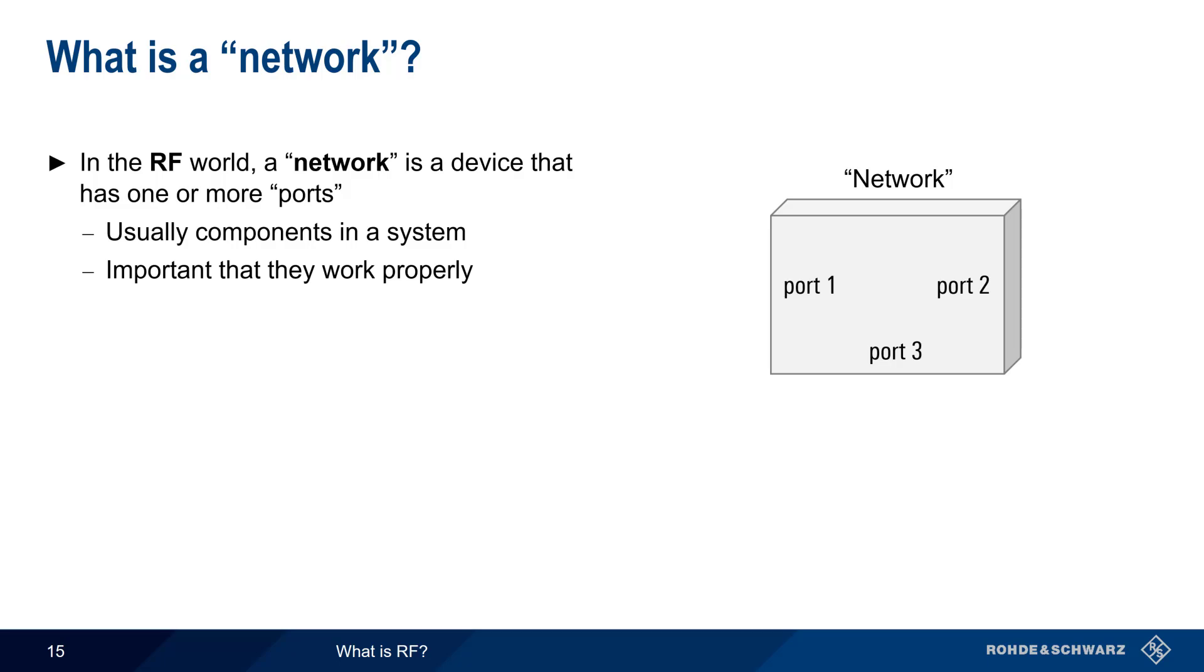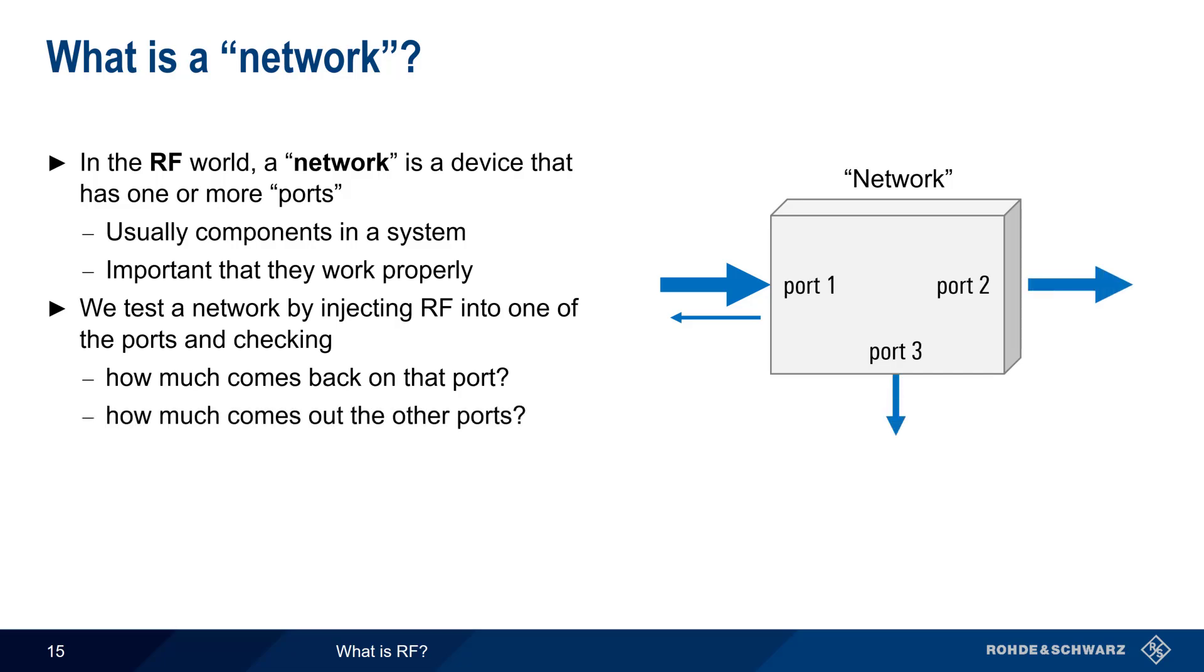It is important that these components work properly to ensure the performance of the entire system, and therefore we need an accurate, reliable, and repeatable way to measure them. Networks are tested by injecting RF into one of the ports, and simultaneously measuring how much RF is reflected back from that port, and how much RF comes out of the other ports. We also might be concerned with how much delay is introduced by the network, or how the network changes other characteristics of the injected signal.